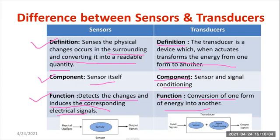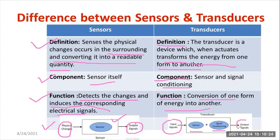Let us look at the block diagram of a sensor. As you can see, the sensor itself is a single element; based on the physical changes, you get readable output quantities. In the case of a transducer, there is a sensing element and a signal conditioning unit, and the input signal is converted into a measurable output quantity in the form of an electrical quantity. The input may be a non-electrical quantity and the output will be an electrical quantity — that is the speciality of the transducer.